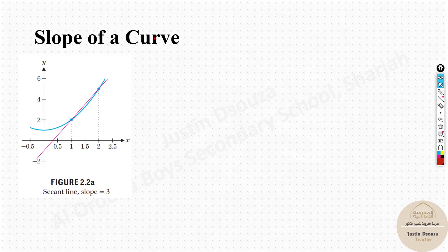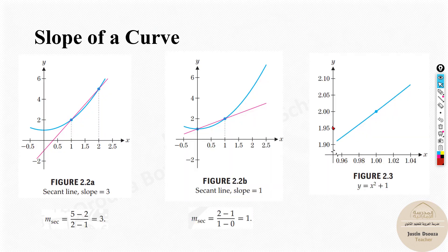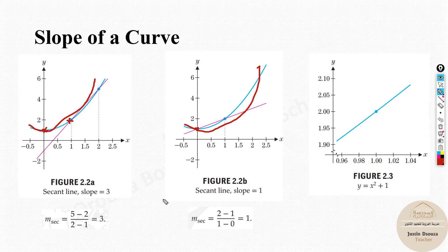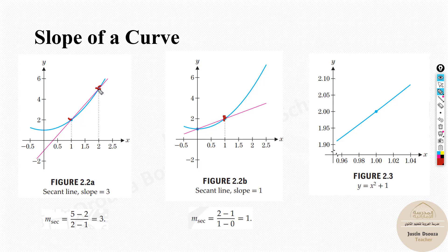We have studied about slope and arc length in different ways in previous terms; now we will learn from a different point of view. So here we are with the slope of a curve. You can see the first figure and the second figure — there's a curve and a secant line. The curve is at the same points: at x=1, y=2, and at x=2, y=5, in both cases. To find a slope we need two points — x₁, y₁ and x₂, y₂ — otherwise we cannot find the slope.